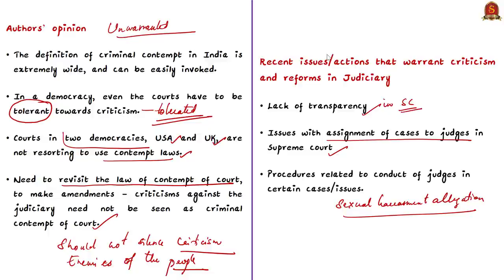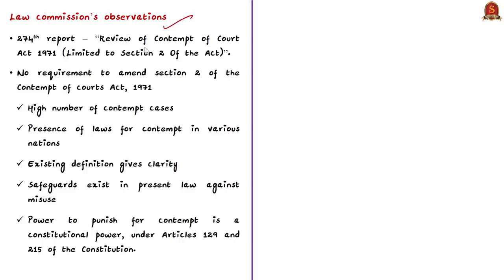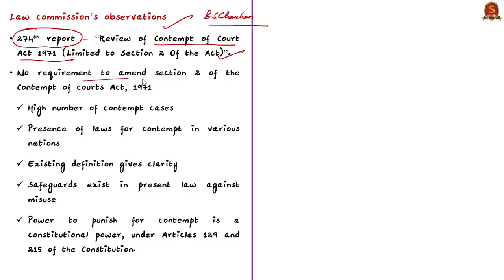Regarding the Law Commission's recommendations: in its 274th report titled 'Review of Contempt of Court Act of 1971, limited to Section 2 of the Act,' the Law Commission reviewed the definitions of civil and criminal contempt. The commission was chaired by former Supreme Court Judge Justice B.S. Chauhan. The report recommended that there is no requirement to amend Section 2. This is because there are a high number of cases of civil and criminal contempt, justifying the continuing relevance of the Act. Additionally, contempt proceedings exist at the international level — even in UK law books — though used rarely.